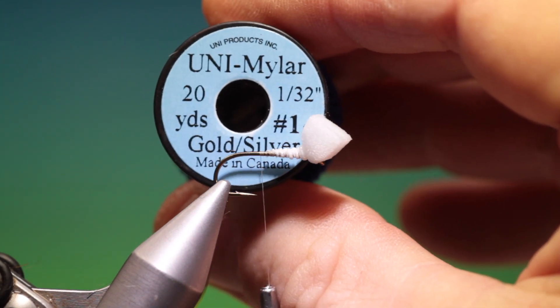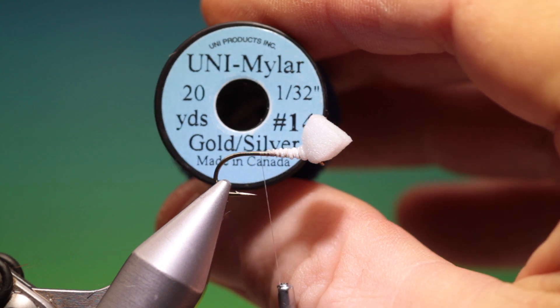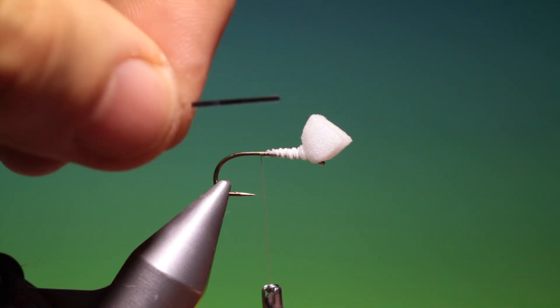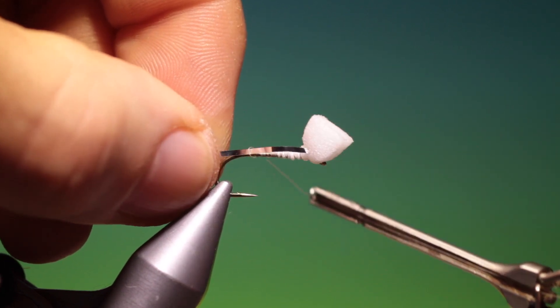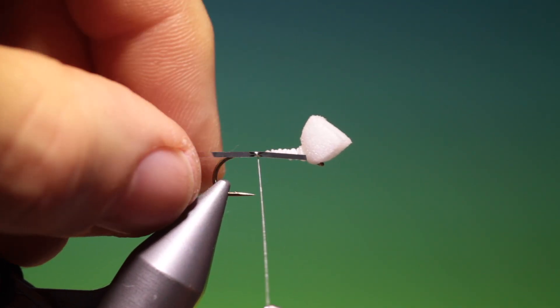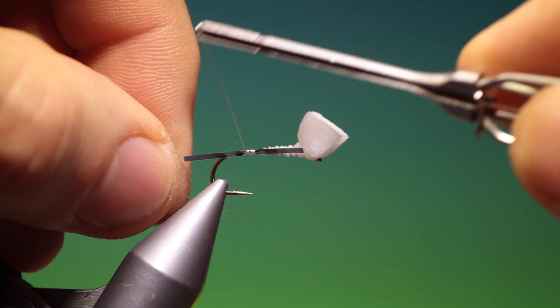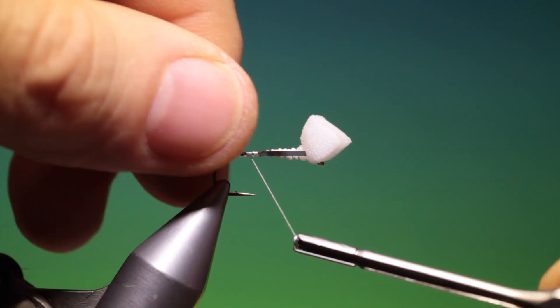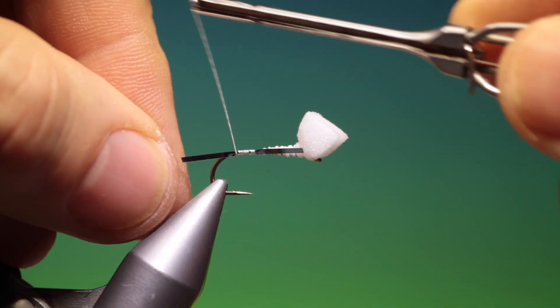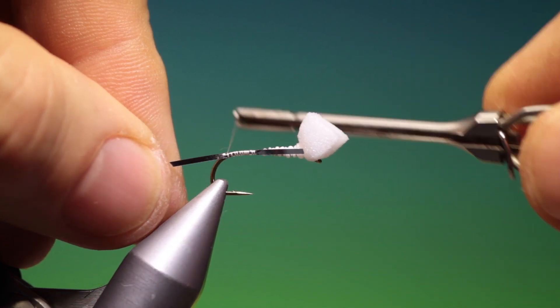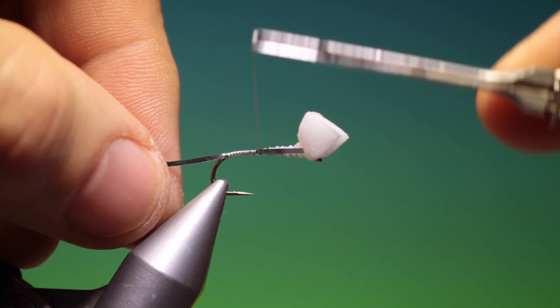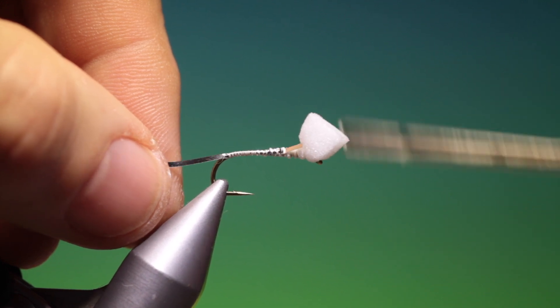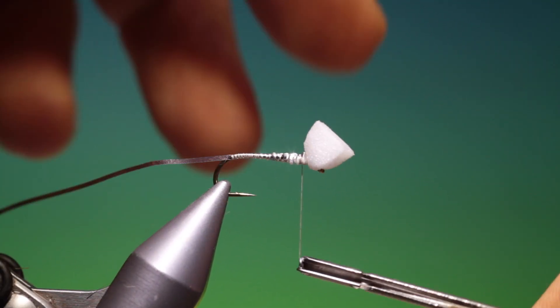Then we need some gold tinsel, flat, tie this in gold side down on the side of the hook shank. And we'll go a little ways, just down the bend a little bit, then we'll make a gold tag. Secure the rest of the tinsel up into the cube.